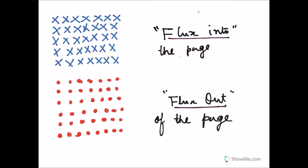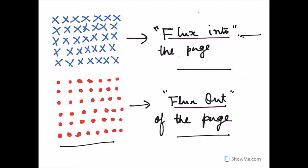Before we proceed, these cross lines indicate magnetic field lines entering into the page — flux into the page. These dots indicate magnetic field lines coming out of the page — flux out of the page. So the cross indicates flux into the page and the dots indicate flux out of the page.